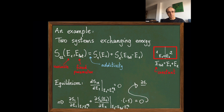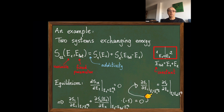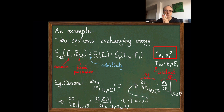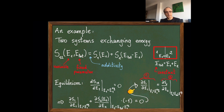Taking this term to the right-hand side of the equation, we get the equilibrium condition: the energy E1 at equilibrium must obey this equation. This equation has a very nice property—the left-hand side depends only on system one, whereas the right-hand side depends only on system two. So equilibrium is given by equating the same quantity in system one and system two. This quantity is going to play a very important role, and we will see that this is going to be the temperature. We define this as one over the temperature.